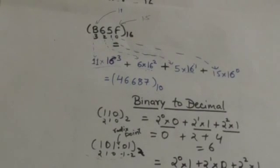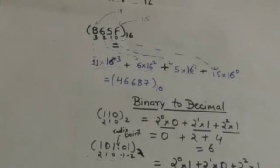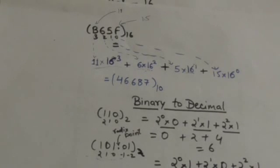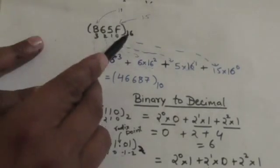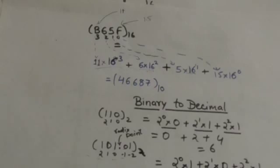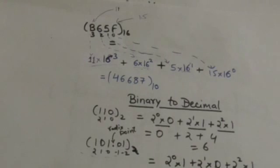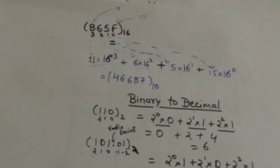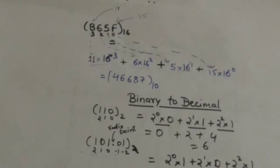Now we have to convert the hexadecimal number — whose base is 16 — into a decimal number. First assign a position to each digit; all digits are at the left of the radix point, so positions are numbered right to left starting from 0. Now multiply each digit by 16 raised to the power of its position. B represents the value 11, so 11 is multiplied by 16^3; 6 is multiplied by 16^2; 5 is multiplied by 16^1; and F, which represents 15, is multiplied by 16^0. Adding all these terms gives the answer 46,687.